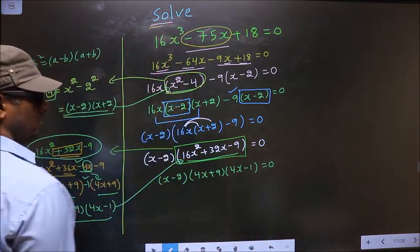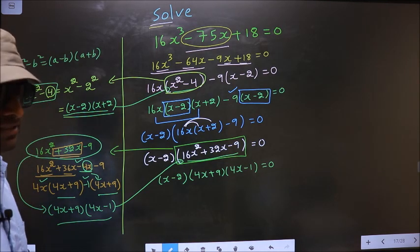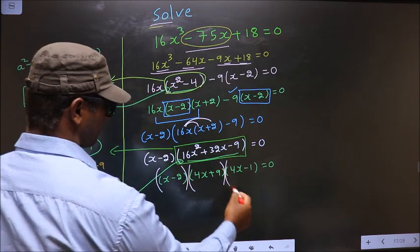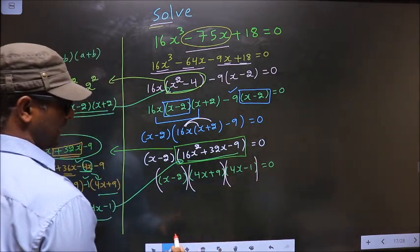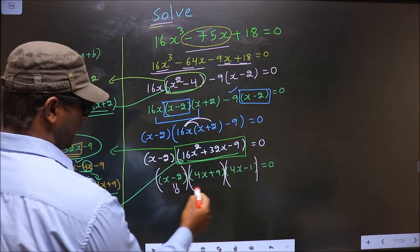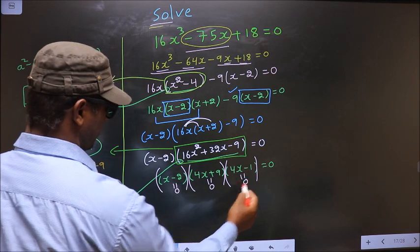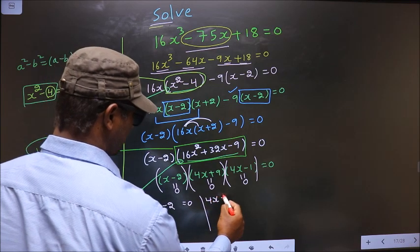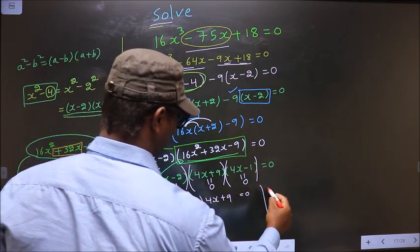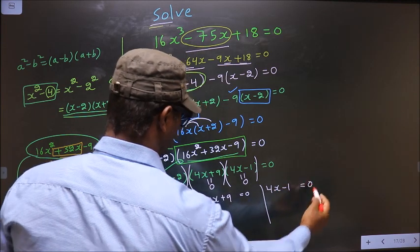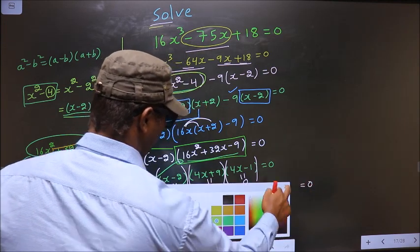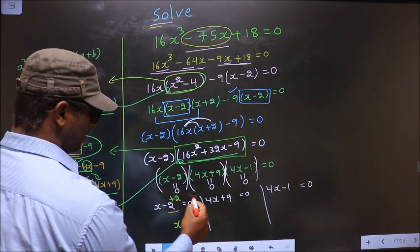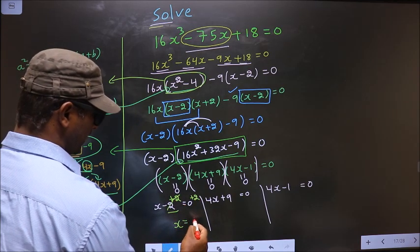We are told to solve, so we should find the values of x. Here we have a product of brackets equal to 0, so to find the values of x we equate each bracket to 0. That is x minus 2 equal to 0, 4x plus 9 equal to 0, and 4x minus 1 equal to 0. To get x from x minus 2 equal to 0, I add 2 to both sides, so x equals 2.